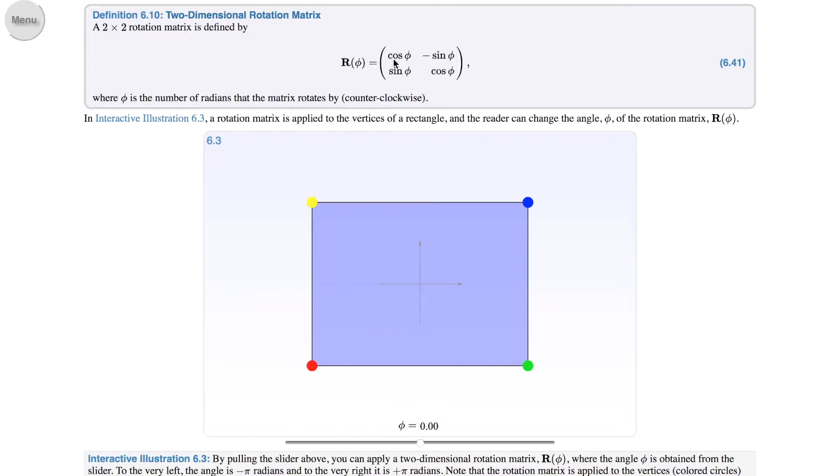It looks like this. It's cosine phi, minus sine phi, sine phi, and cosine phi. And the parameter here is only this phi parameter here and that determines how much you rotate.